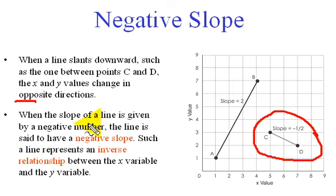When the slope of a line is given by a negative number, the line is said to have a negative slope. Such a line represents an inverse relationship between variables X and Y.